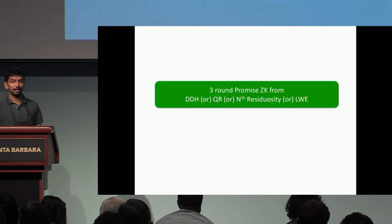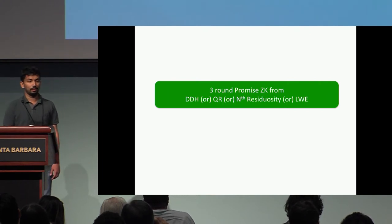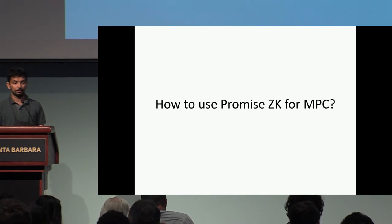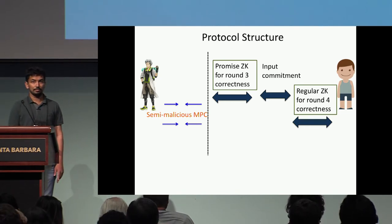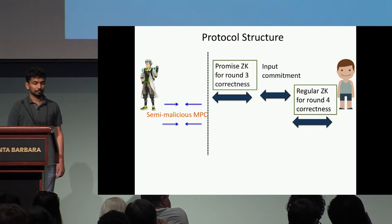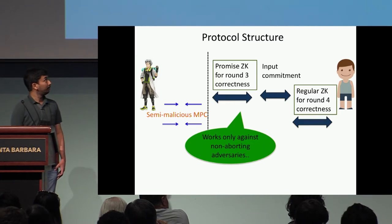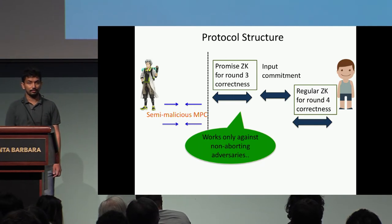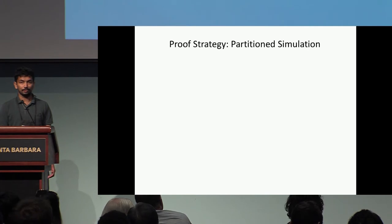We can build three-round Promise ZK from standard assumptions. Now let me briefly describe how to use Promise ZK to build round-optimal MPC. Recall our protocol uses a semi-malicious MPC with parties proving honest behavior. Since Promise ZK only works against adversaries who do not abort in the third round, but MPC must handle all adversaries including those that do abort, we devise a new proof strategy called partition simulation.